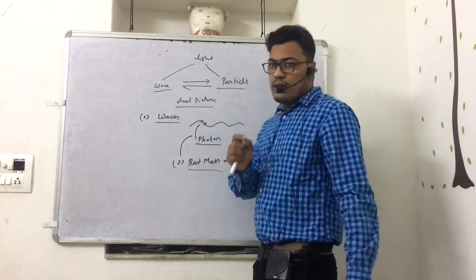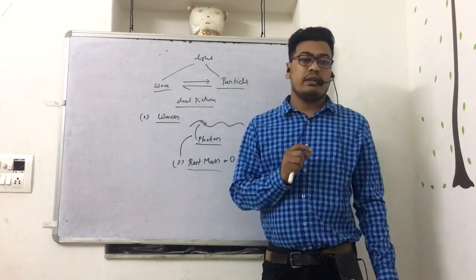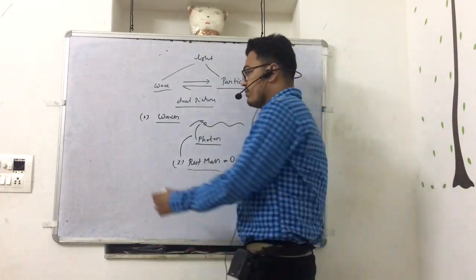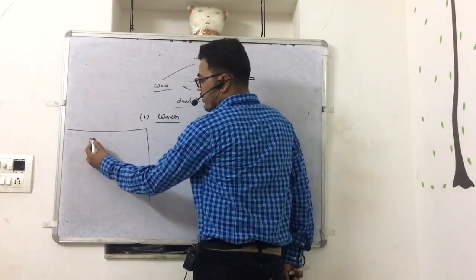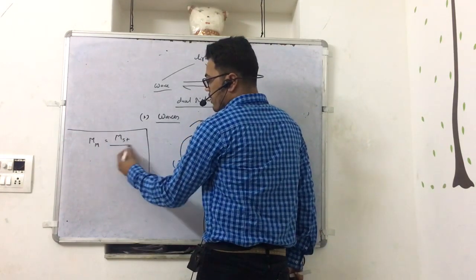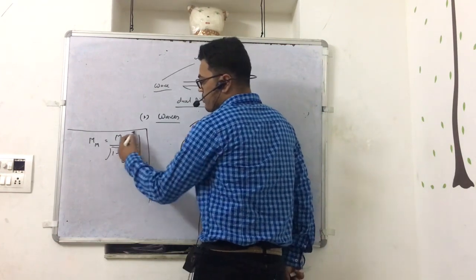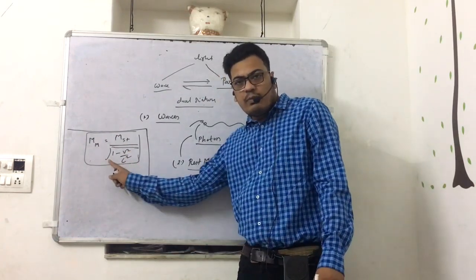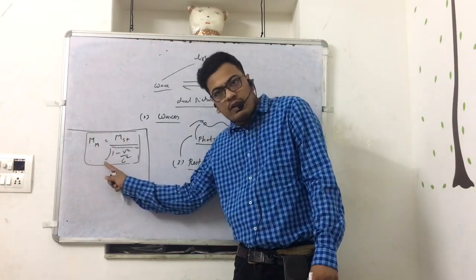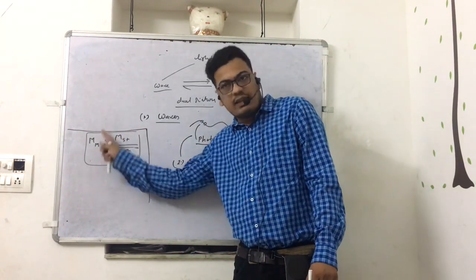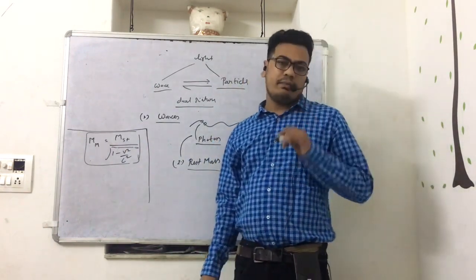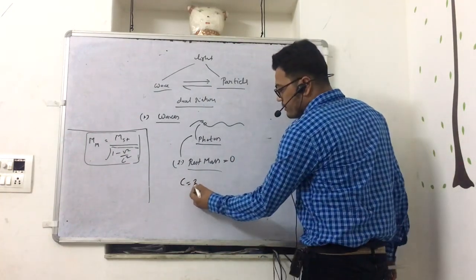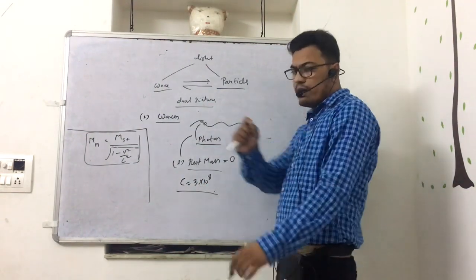The rest mass is zero. The concept is that if something moves, its mass increases — this is the concept of relativity. The relativistic mass formula is m₀ divided by √(1 - v²/c²). The mass increases as velocity increases. Remember that for any moving particle, the mass increases. Now, how much will the mass rise? If the rest mass is zero, then even with motion, the mass remains zero.